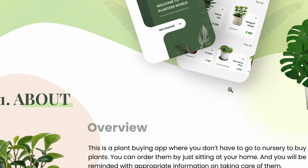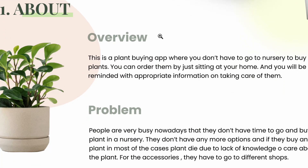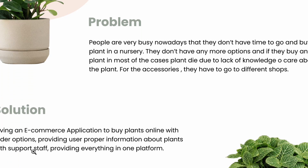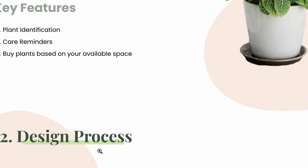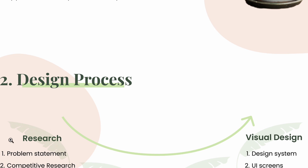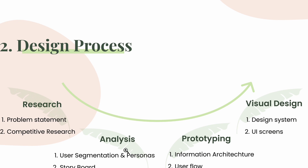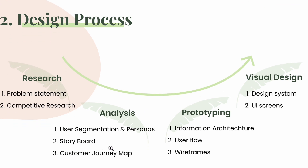Next, I have given an overview of the problem statement and how the solution was made, and I have also highlighted the key features. Then comes the design process — the steps I followed throughout the journey: starting with the problem statement, competitive research, user segmentation and personas, creating storyboards, customer journey maps, information architecture, user flows, wireframes, design system, and finally the UI screens.